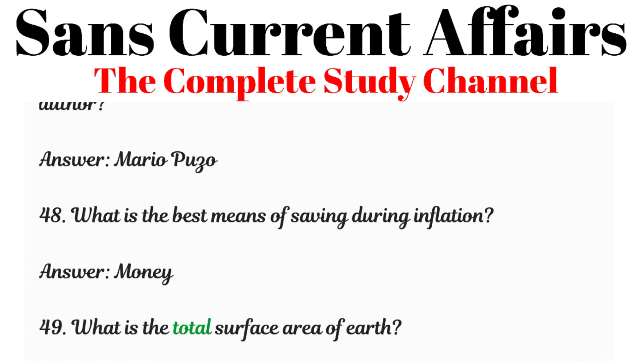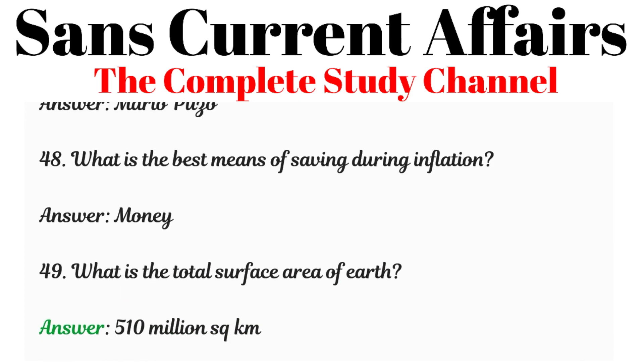Question 49: What is the total surface area of earth? Answer: 510 million square km.